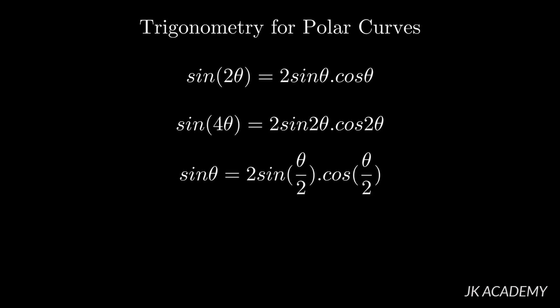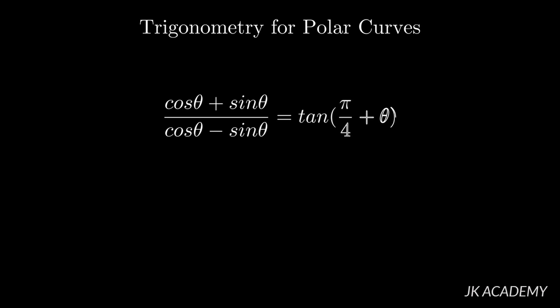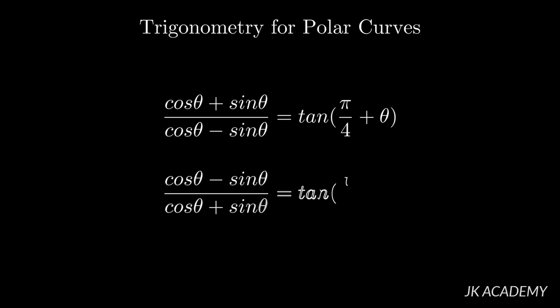Now we will see two more formulas which we are going to use in the polar course. These are: (cos theta plus sin theta) divided by (cos theta minus sin theta). These formulas apply when cos and sin alternately appear in the numerator and denominator with opposite signs. The result becomes tan of (pi by 4 plus theta) — the sign between cos and sin in the numerator is written after pi by 4. So (cos theta minus sin theta) divided by (cos theta plus sin theta) equals tan of (pi by 4 minus theta), since minus is between cos and sin.